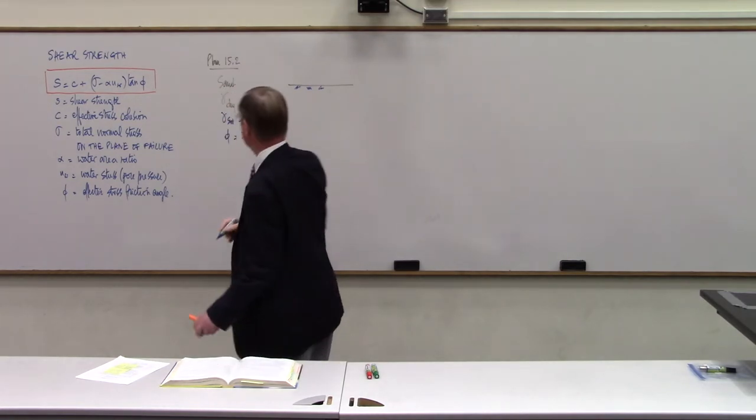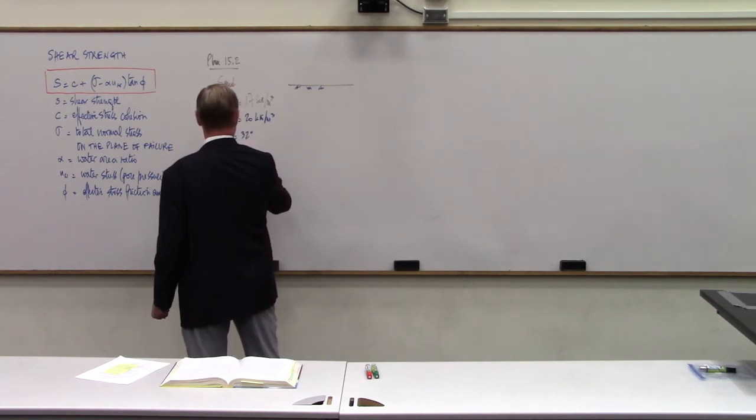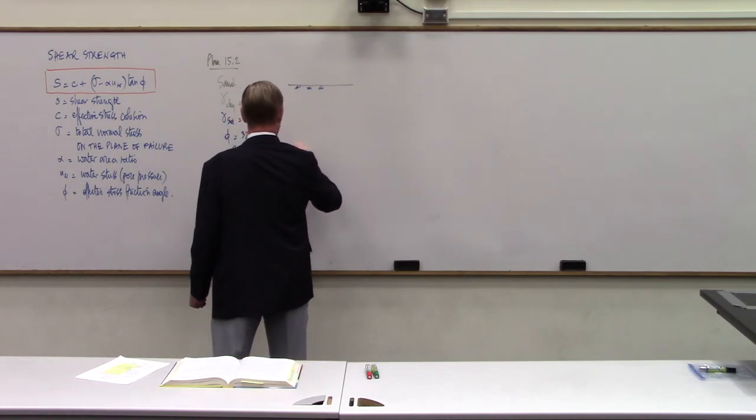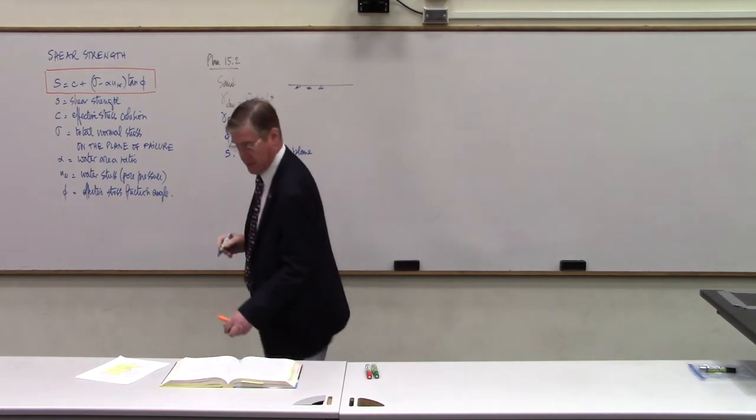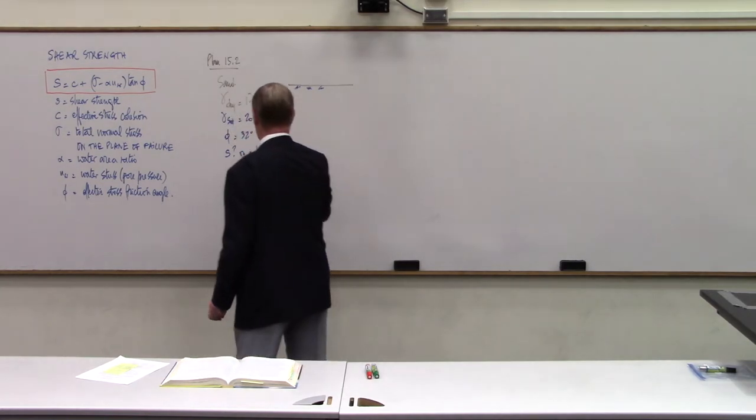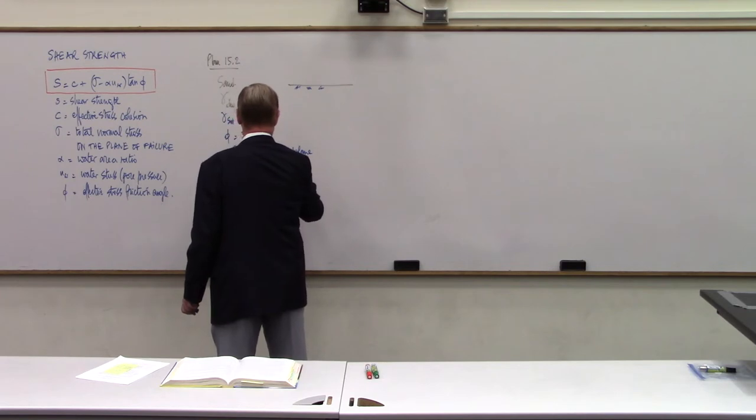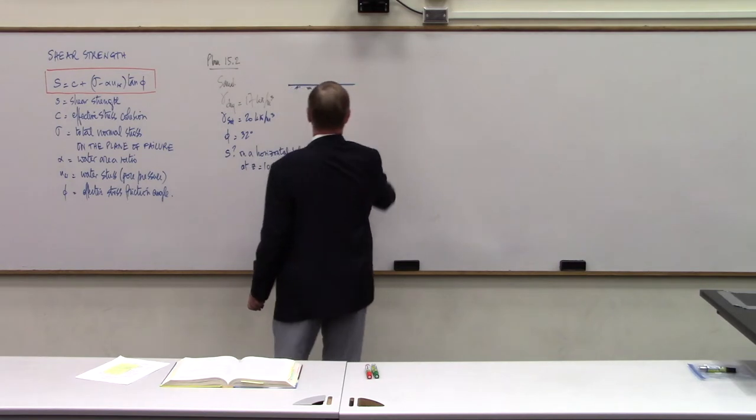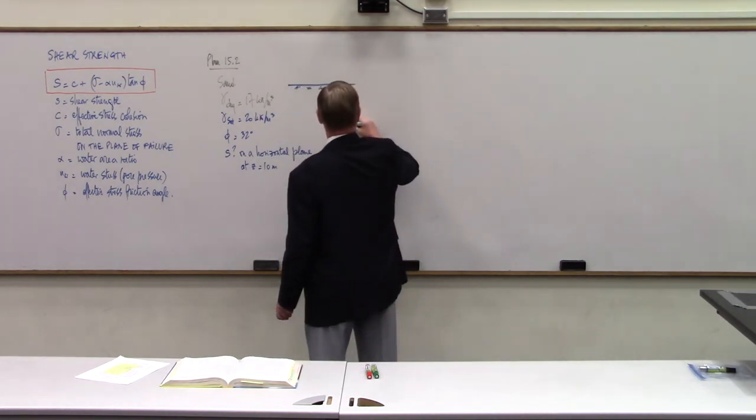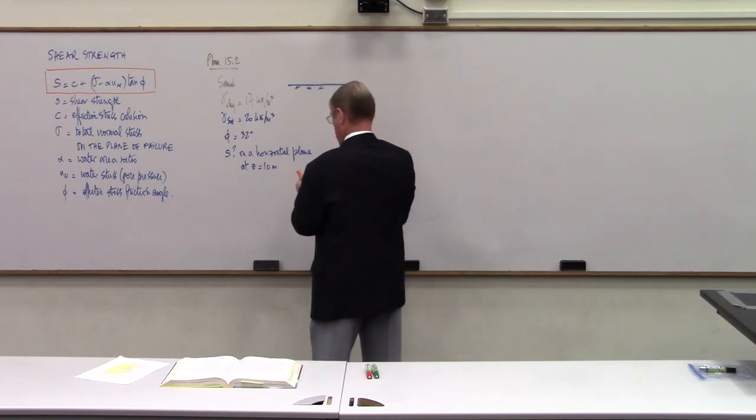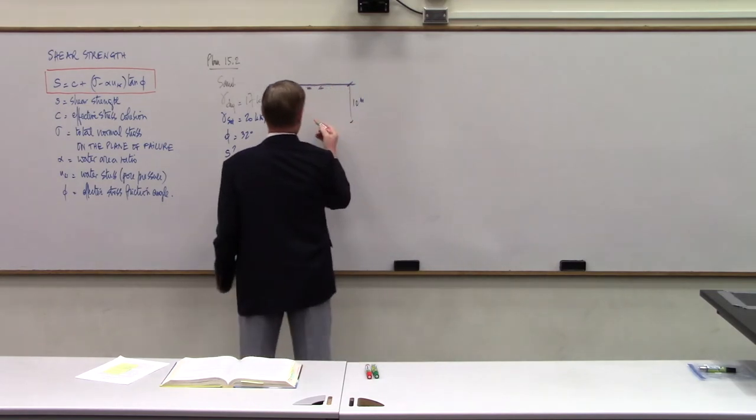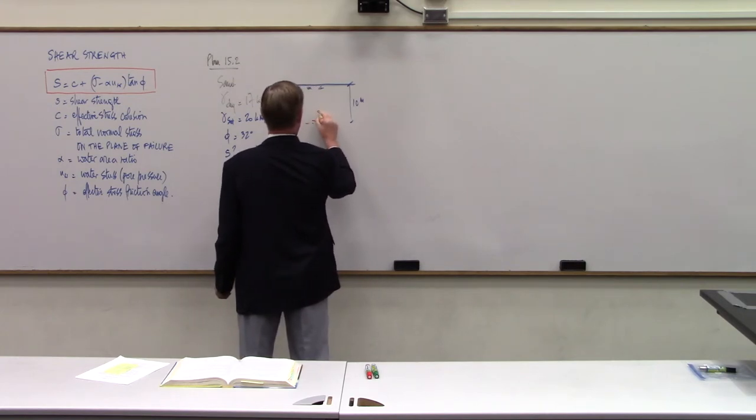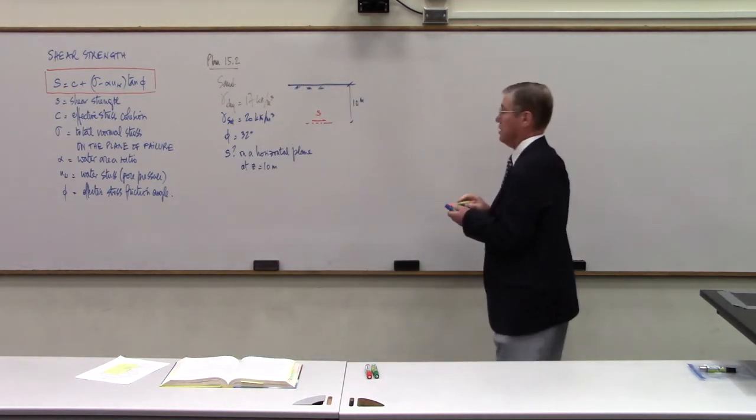And what else do we have? Saturated unit weight gamma saturated is 20 kilonewton per cubic meter. Friction angle 32 degrees. Calculate the shear strength. So the question is shear strength on a horizontal plane at a depth of 10 meters. At z equals 10 meters. So you have the ground surface right here. And then 10 meter below, you have a horizontal plane. And you want to know what the shear strength of the soil is on that horizontal plane.